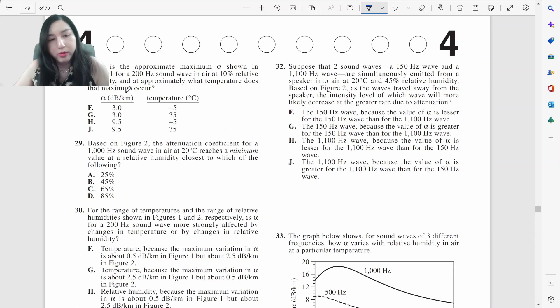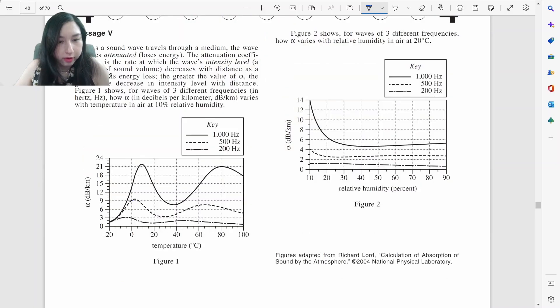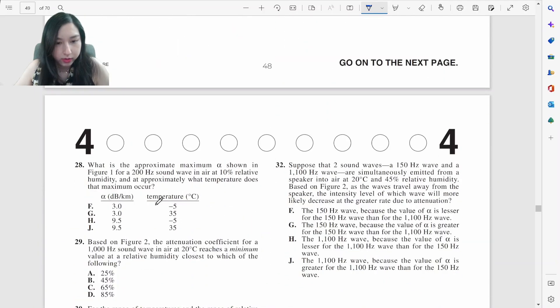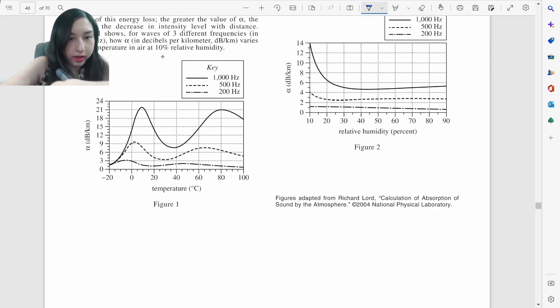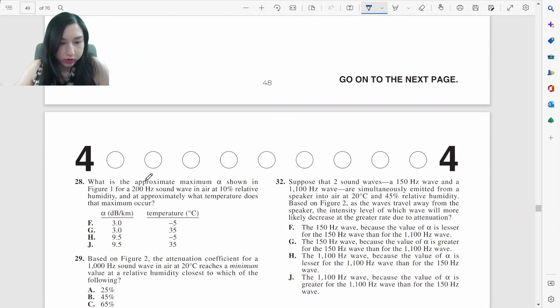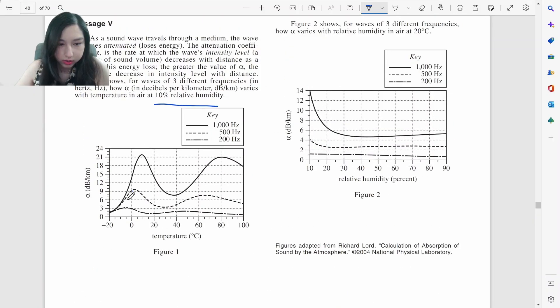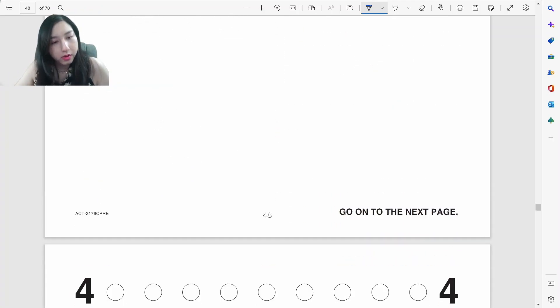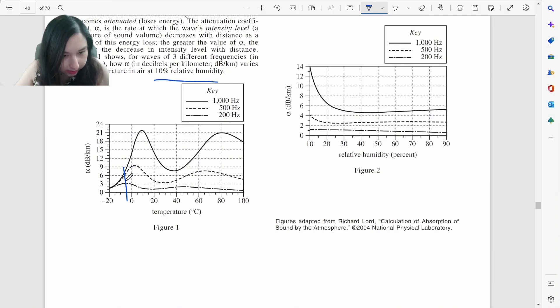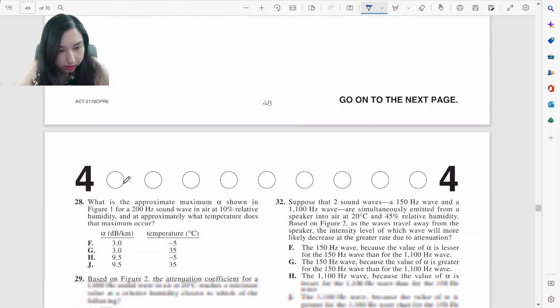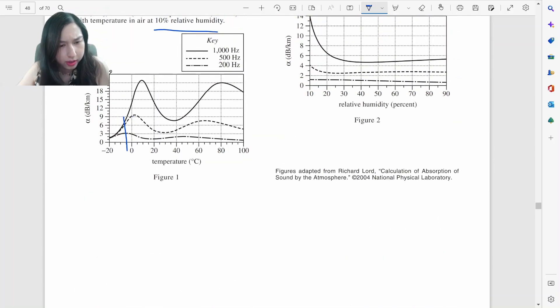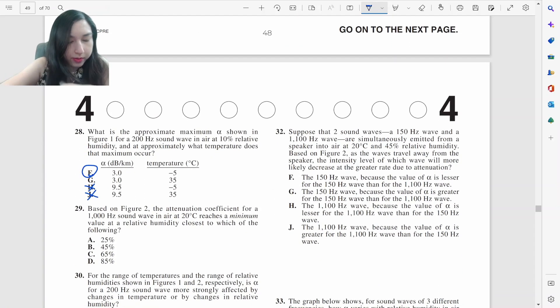Let's look at this. Something about sound waves and coefficients. What is the approximate maximum coefficient for 200 hertz sound wave air, for figure one. At 10% relative humidity. So this is all at 10% relative humidity for 200 hertz. So maximum for 200 hertz. So the bottom one, this looks like this one. And that would be maximum is three. Temperature would be negative something. So it's going to be F.